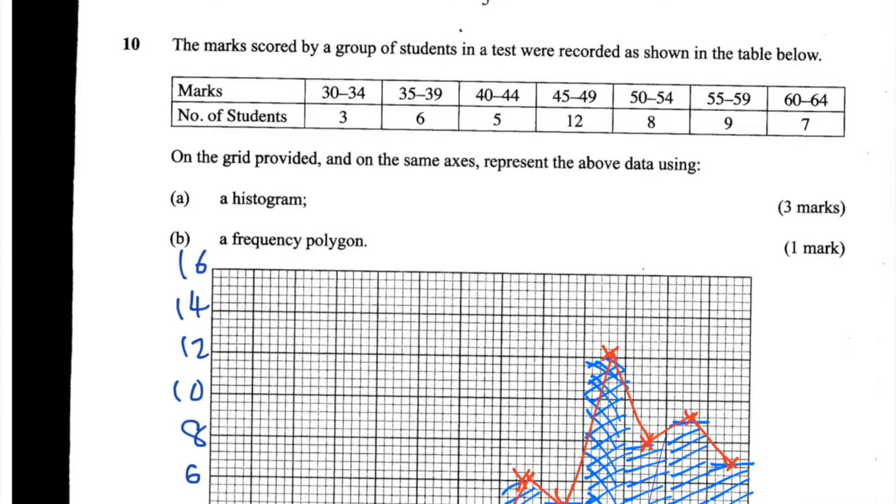Question number 10 of the 2015 KCSE paper says, the marks scored by a group of students in a test were recorded as shown in the table below. So you have three students scoring between 30 and 34, six students scoring between 35 and 39, five students scoring between 40 and 43, 12 students scoring between 45 and 49, eight students scoring between 50 and 54, nine students scoring between 55 and 59, and seven students scoring between 60 and 64.